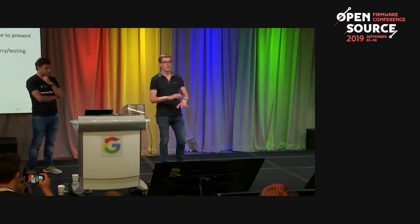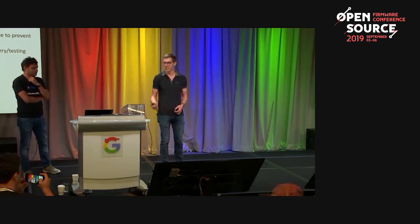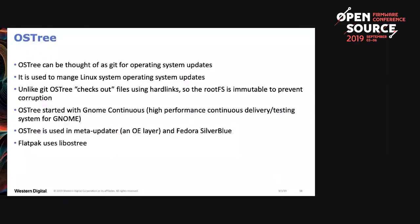One of the demos will show OSTree — an immutable way to boot embedded systems. You can update your system like a Git update: pull in the update and reboot into your newly updated system. It's what Fedora Silverblue uses, and what MetaUpdater uses. The key idea is that RISC-V does the same things in boot that everyone else does — nothing special.